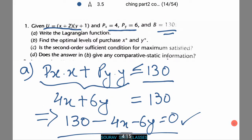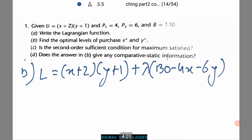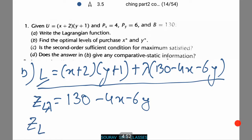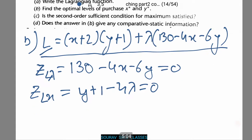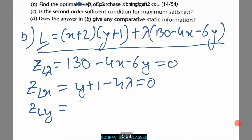Let's see what number b suggests. Now we need to find the optimal levels of purchase x star and y star. Notice I've written already the Lagrangian function. Why? Because we are going to use this to find our answer. We'll use this Lagrangian function as we'll first divide zl with respect to lambda, which comes to 130 minus 4x minus 6y. Now we'll find similarly zlx which equals y plus 1 minus 4 lambda equals 0 as we always equate to find our answer. Now zly equals x plus 2 minus 6 lambda which equals 0.